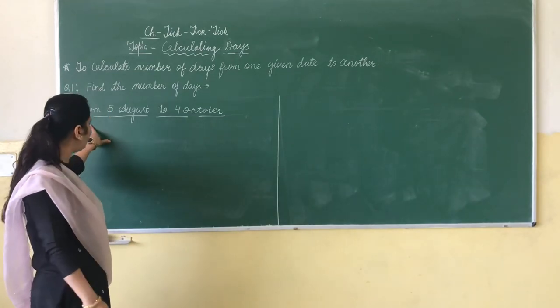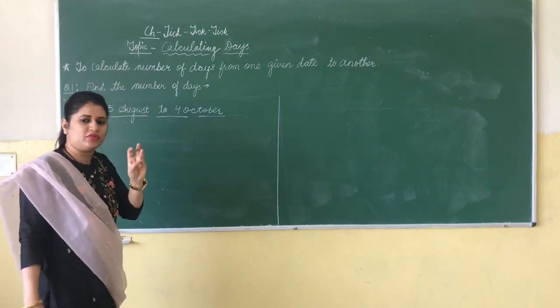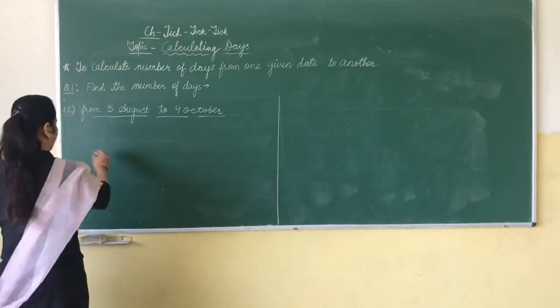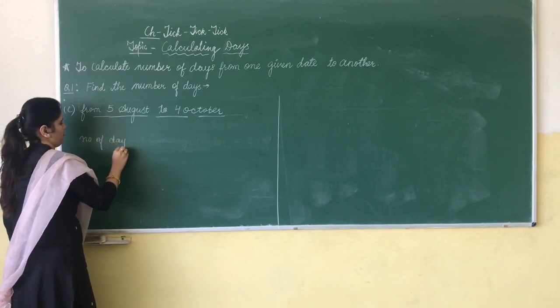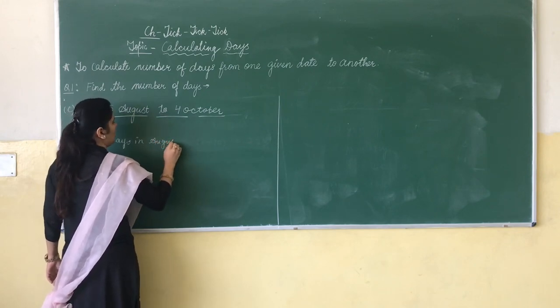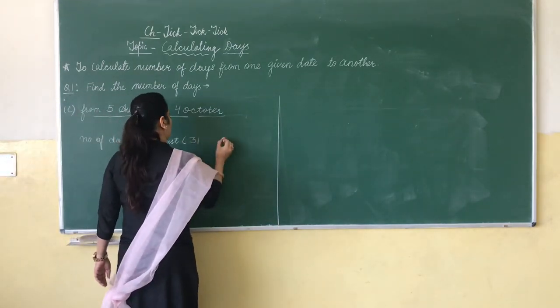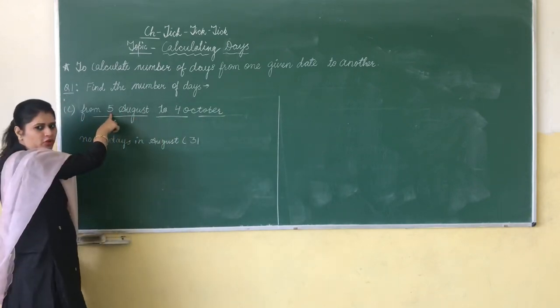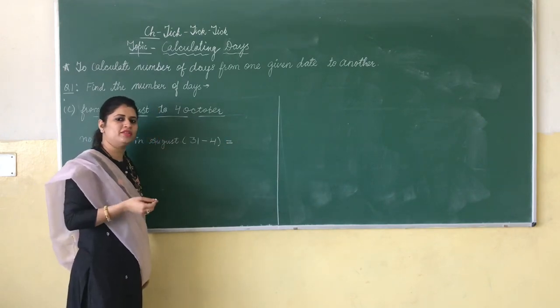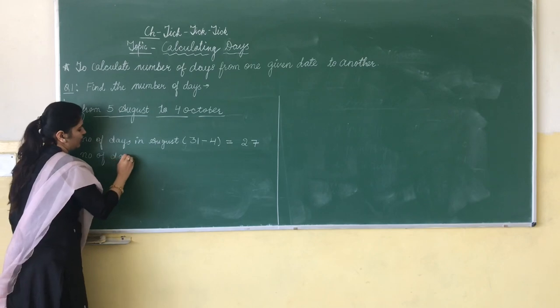Part C is find the number of days from 5th August to 4th October. So we need to take the months October, September, and August. Number of days in August, how many days are in August? 31 days. 31 minus 4, because 5 is also there. How many days? 27. Number of days in September, how many days are there in September? 30 days.